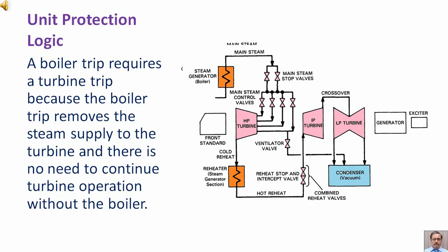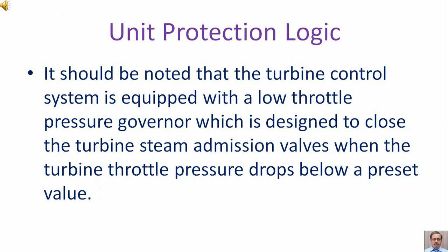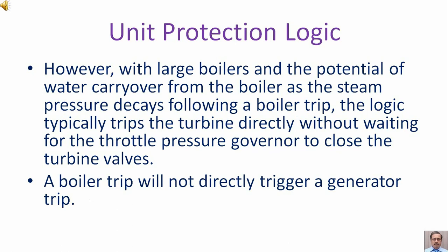A boiler trip requires a turbine trip because the boiler trip removes the steam supply to the turbine and there is no need to continue turbine operation without the boiler. It should be noted that the turbine control system is equipped with a low throttle pressure governor, designed to close the turbine steam admission valves when the throttle pressure drops below a preset value. However, with large boilers and the potential of water carry-over as steam pressure decays following a boiler trip, the logic typically trips the turbine directly without waiting for the throttle pressure governor. A boiler trip will not directly trigger a generator trip.